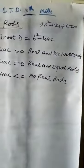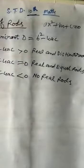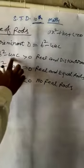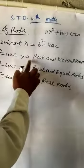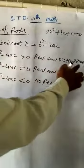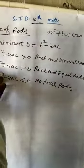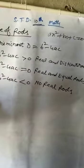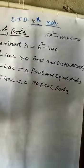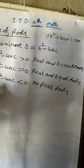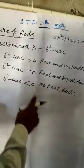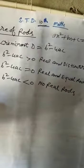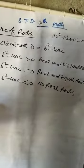Discriminant D equal to B square minus 4AC. If B square minus 4AC greater than 0, real and distinct roots. If B square minus 4AC equal to 0, real and equal roots. If B square minus 4AC less than 0, no real root.